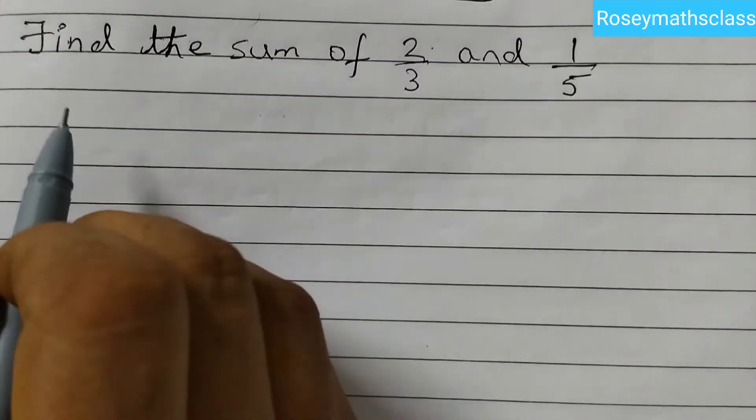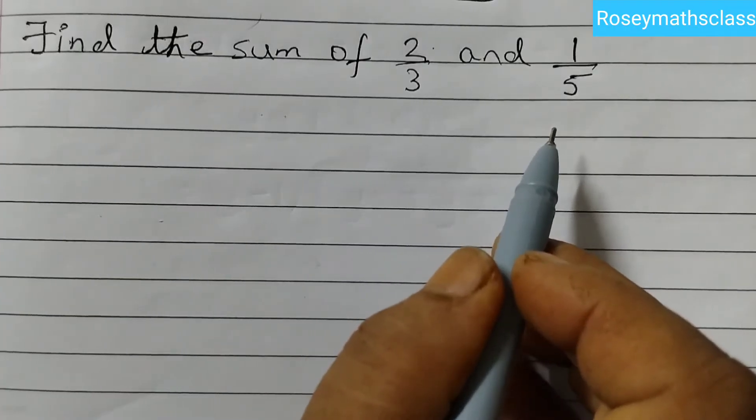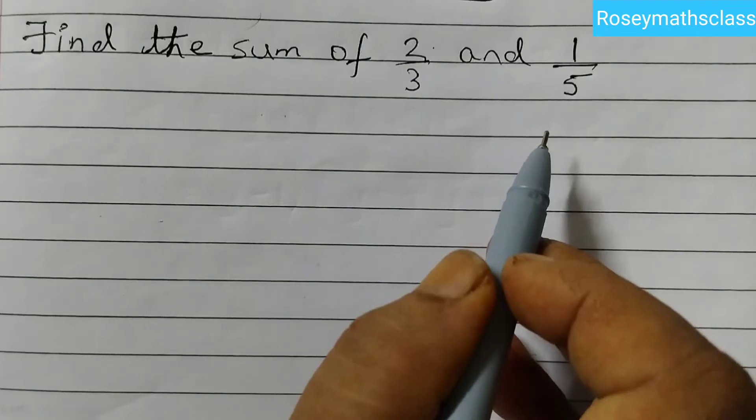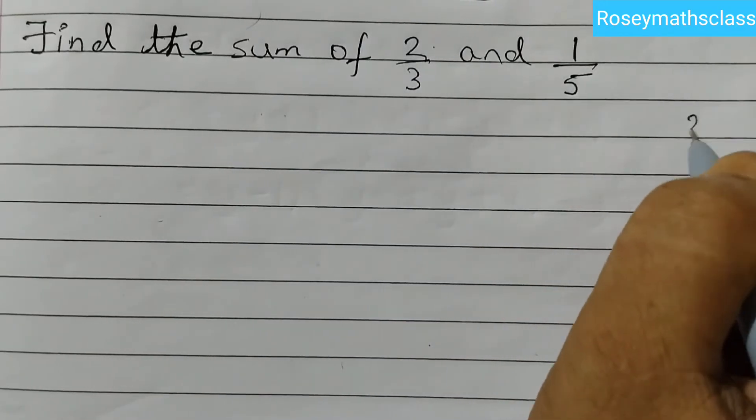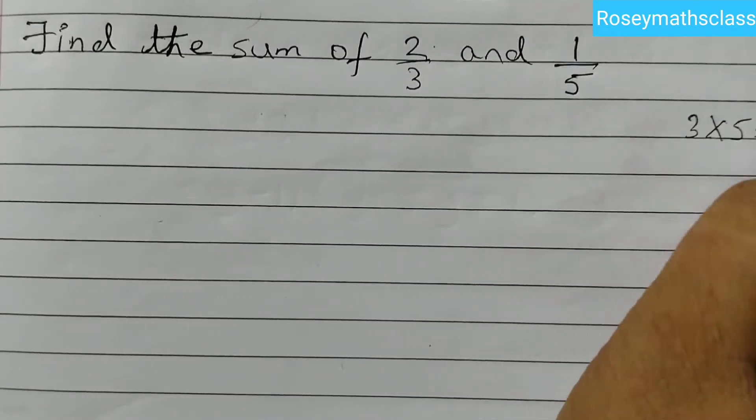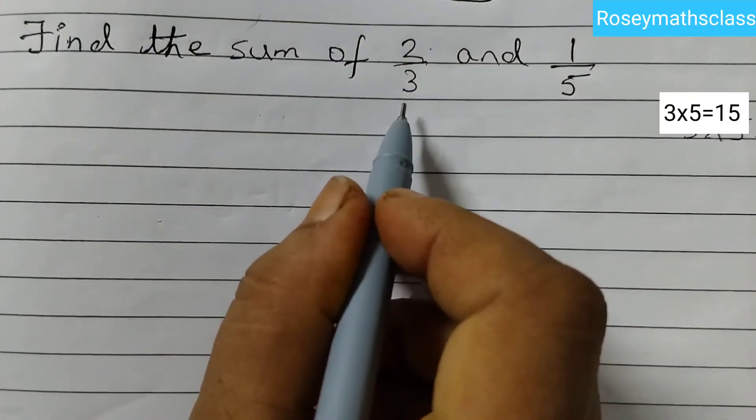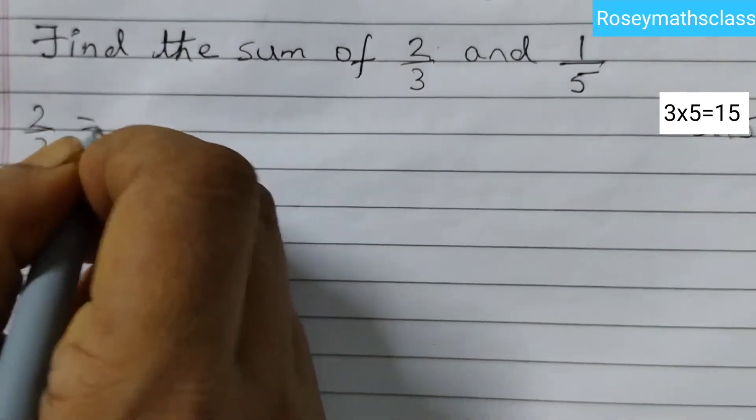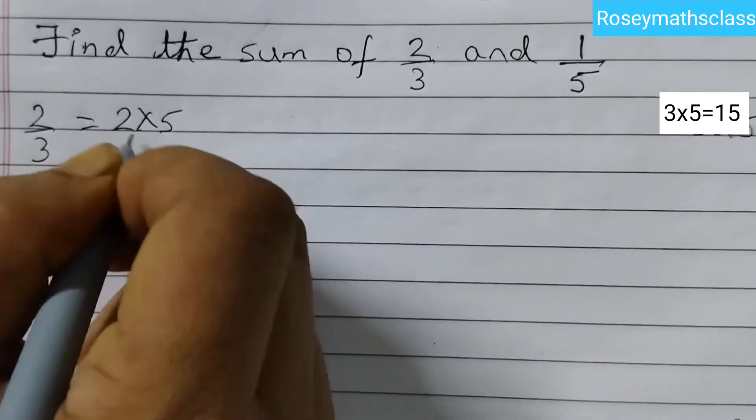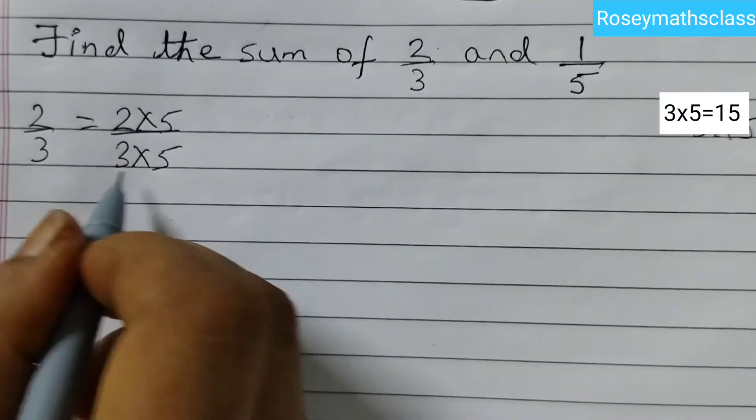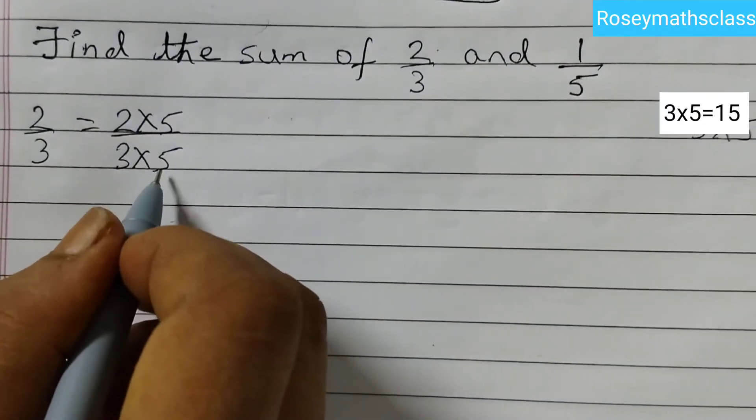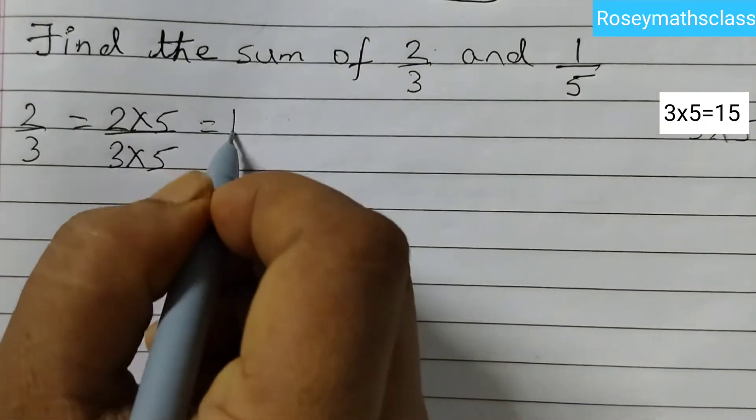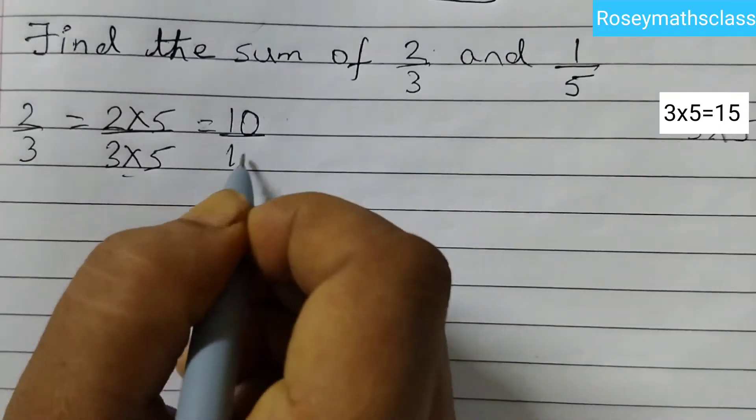The next one is find the sum of 2 by 3 and 1 by 5. The denominators of the given fractions are 3 and 5. So the lowest common multiple of 3 and 5 is 3 into 5 which is equal to 15. We need to make the denominator 15 for both these fractions. So 2 by 3 is equal to 2 into 5 and 3 into 5. Because 3 fives are 15, so whatever number we are multiplying in the denominator, same number we have to multiply in the numerator. So 2 fives are 10 and 3 fives are 15.